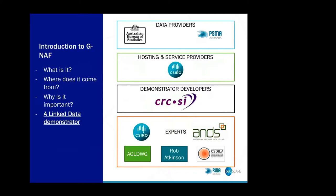We started this activity with a whole bunch of other people. There was a number of people who met in a workshop we ran in Canberra with Geoscience Australia at the time. We had the data providers — Australian Bureau of Stats and us — hosting service providers including CSIRO and Geoscience, people building demonstrators, as well as a whole bunch of different experts, which included CSIRO, members of the Australian Government Linked Data Working Group, Rob Atkinson, the Centre for Spatial Data Infrastructures and Land Administration in Victoria, and ANS. Part of that discussion was about getting guidance on how we might go about this task.